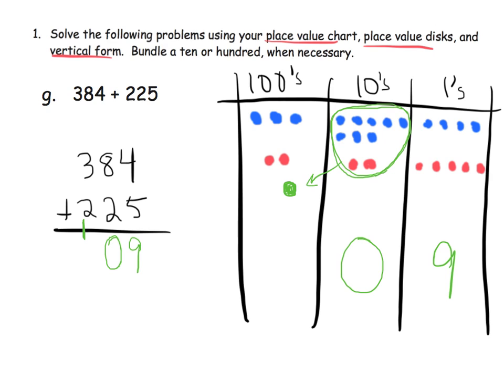Going back to our place value chart, we've got 3 hundreds plus 2 hundreds plus 100, which gives us 6 in the hundreds column. So over here in vertical form, 3 hundreds plus 2 hundreds plus 100 gives us 6 hundreds. Nothing needs to be regrouped, so our answer is 609.